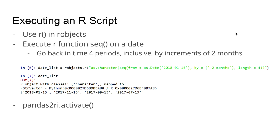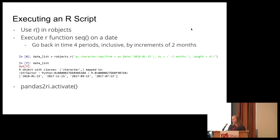For executing an R script, you use this R function. I wanted to do something distinctly R, not just hello world. So I created a sequence of four dates going back two months at a time. If I run this, even though I've set it as a list and return date list, I get an R object back. In Spyder as my IDE, date list doesn't show up in my variable list because it's an R object, not a Python object. I actually have to run pandas2ri.activate in order to make my variables start showing up as Python variables.